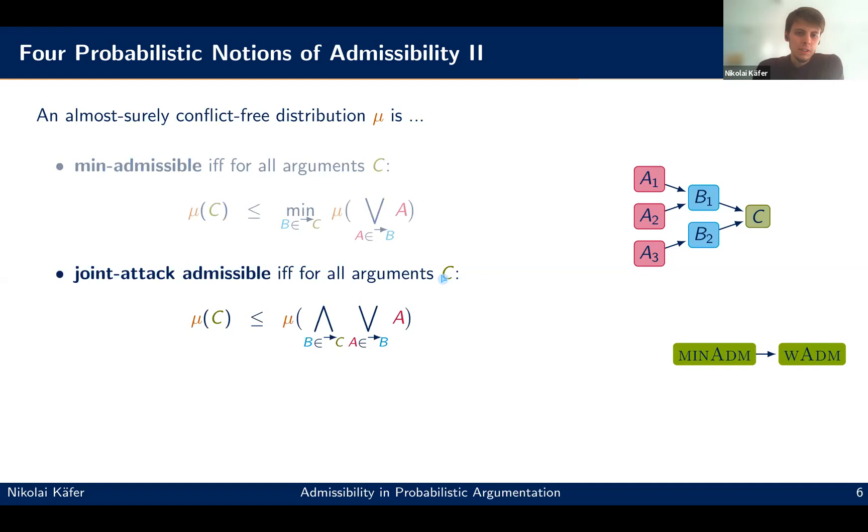Then slightly related, but even a bit more strict is joint attack admissibility. So this is what you saw before, this describes all the argument sets under which C is attacked. And here then we require that the probability of these argument sets under which C is defended acts as an upper bound for the probability of C. And then again, this is a bit stricter than min admissibility, but implies it.